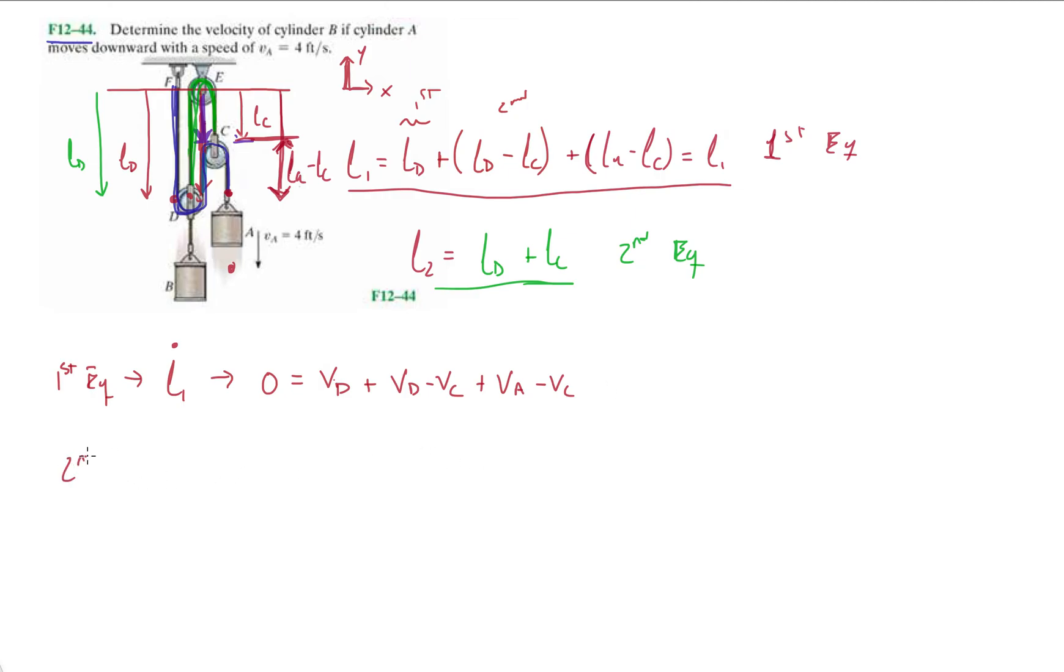And from the second equation, right? So let's do l two prime. l two is constant, like we've done the other problems. So it's going to be zero equals vd plus vc. Okay. So now here we can say vc is equal to minus vd.